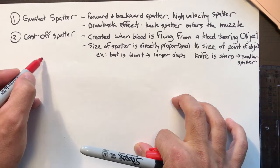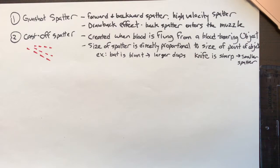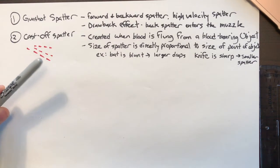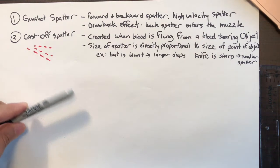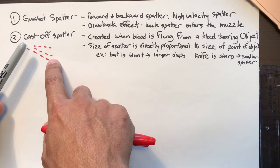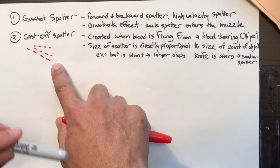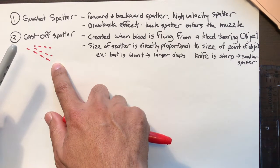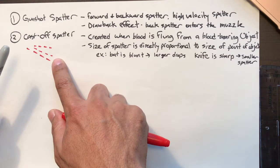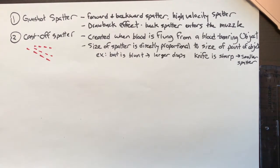You can determine the number of blows from cast-off spatter. With three cast-off arcs found at a crime scene: the first blow has no blood on the weapon yet; the backswing produces the first cast-off; the second blow produces nothing; the backswing produces the second cast-off; and the third backswing produces the third cast-off. So three cast-off arcs equals two blows — the person was struck twice.